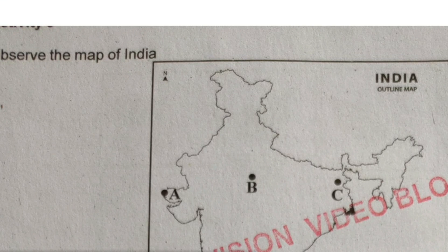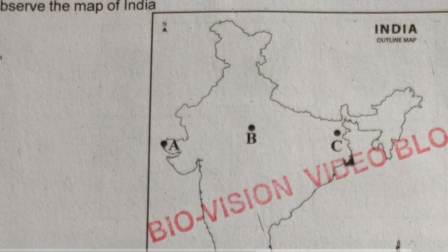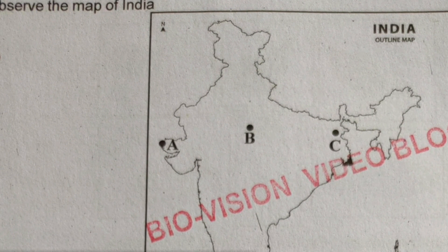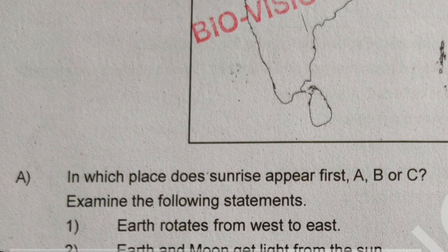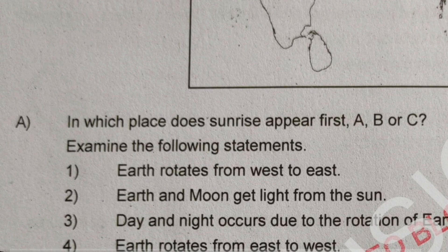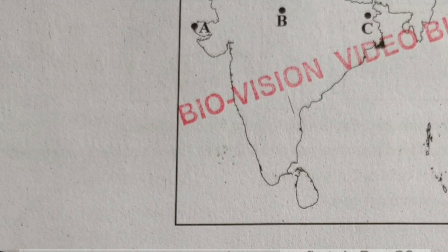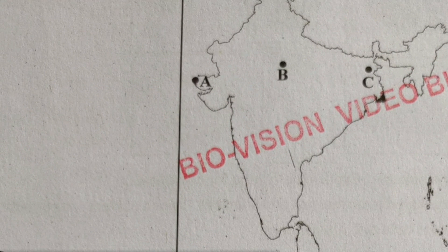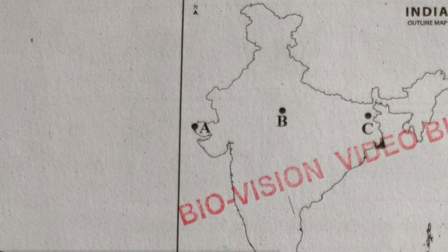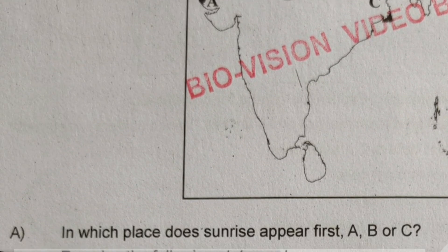Let's move on to the next activity, Activity 6. Observe the map of India. The map shows positions A, B, and C. Question number A: In which place does sunrise appear first — A, B, or C? The answer is option C. C is where the sun appears first.